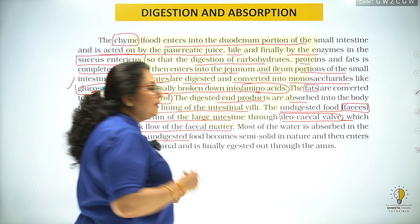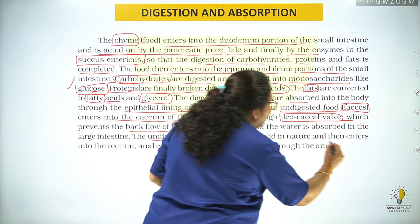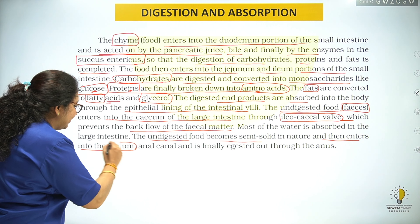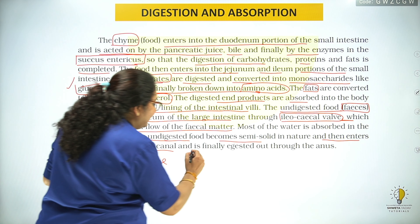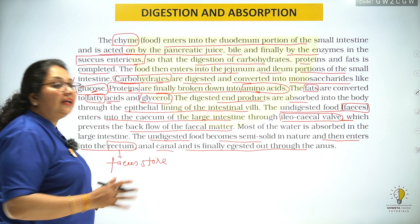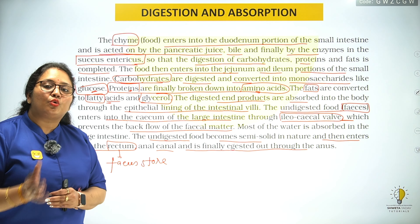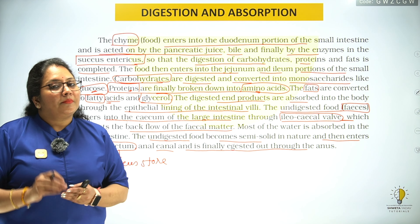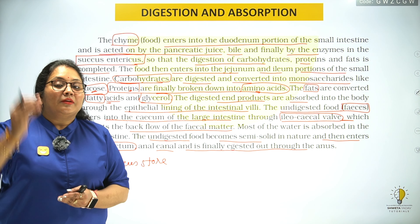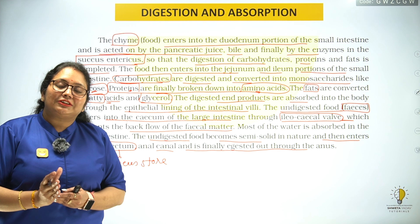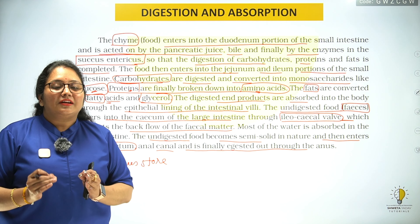Most of the water is absorbed in the large intestine. The undigested food becomes semi-solid in nature and enters into the rectum, which stores the feces. From the anal canal it is finally ejected through the anus. Aap mere YouTube channel pe is chapter ke topic-wise aur complete videos dekh sakte hain.